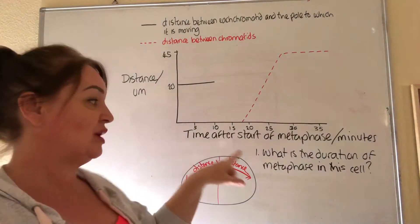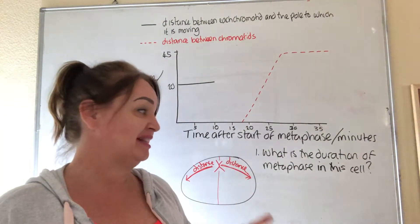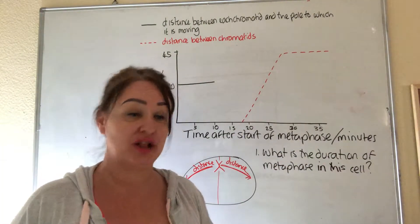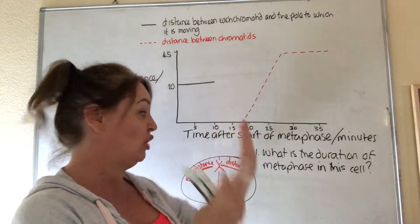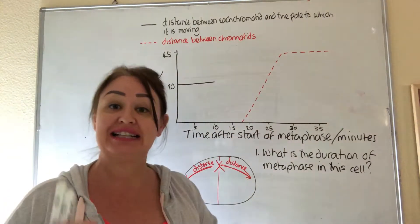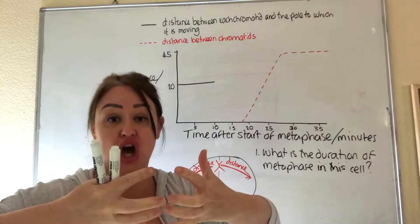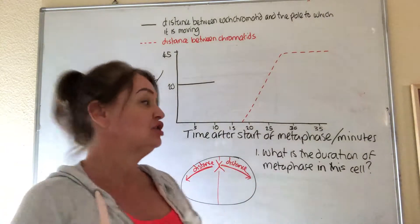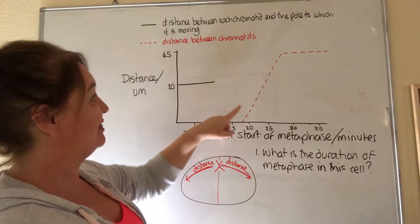So the first question says, what is the duration of metaphase in this cell? Well, metaphase is when they all line up on the equator and anaphase is when they start to be pulled apart. So if we look at this line here,